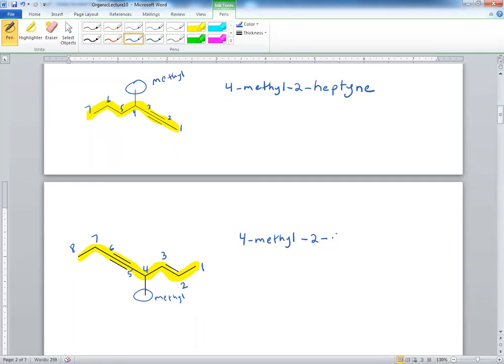You've seen that with the alcohol and the alkene, but what you say is, since we have 8, that's octane, so it indicates that the double bond is at the second carbon, octane. The triple bond is at 5-Y-N-E. 4-methyl, 2-octane, 5-Y-N-E.